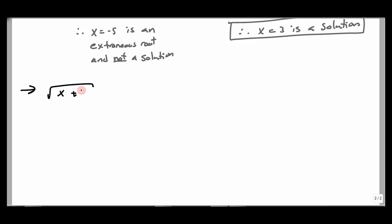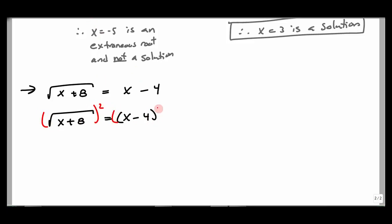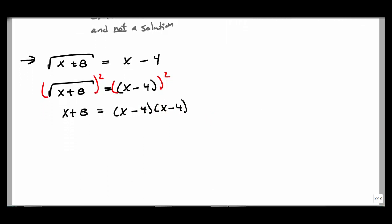Let's look at: square root of (x + 8) equals x − 4. The square root is already isolated, so I don't need to worry about isolating it — I can go straight to squaring both sides. Whatever you do to one side, you do to the other. Squaring the square root gives the radicand back: x + 8 = (x − 4)². Remember, (x − 4)² is not x² − 16 — you have to FOIL: (x − 4)(x − 4).